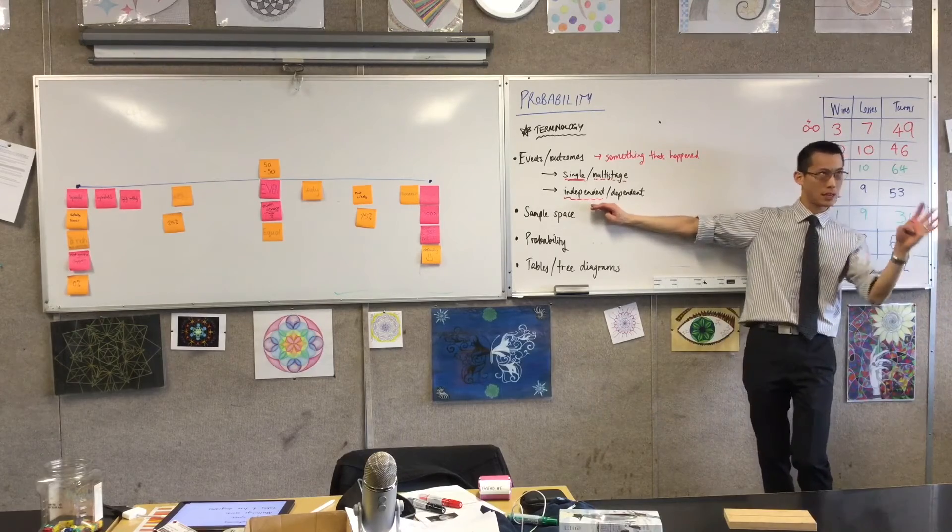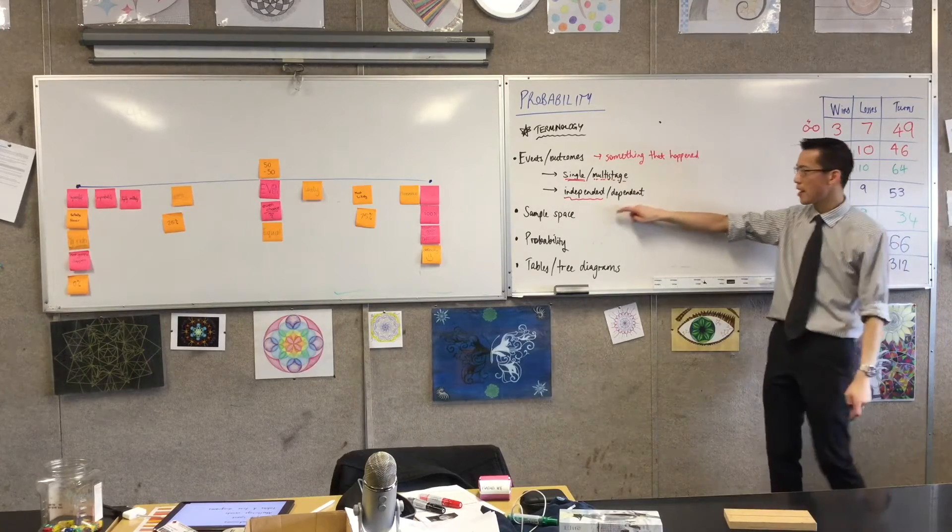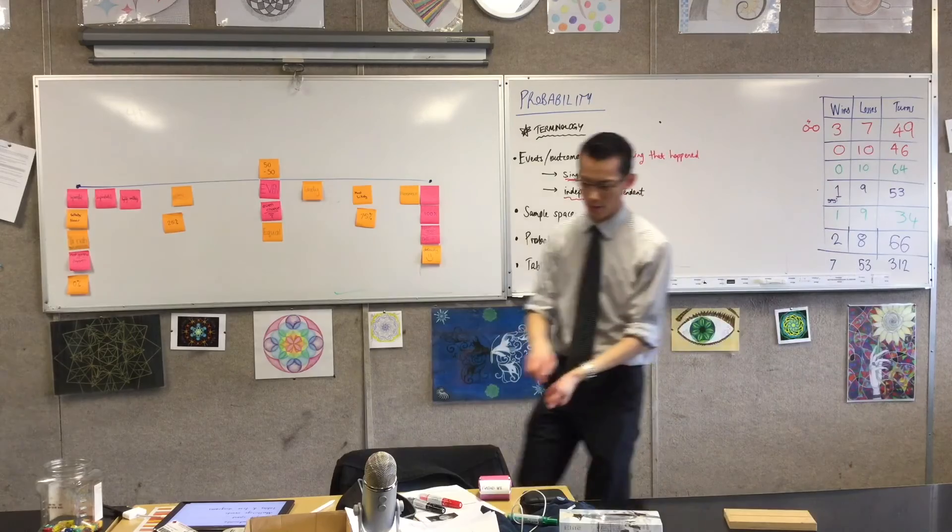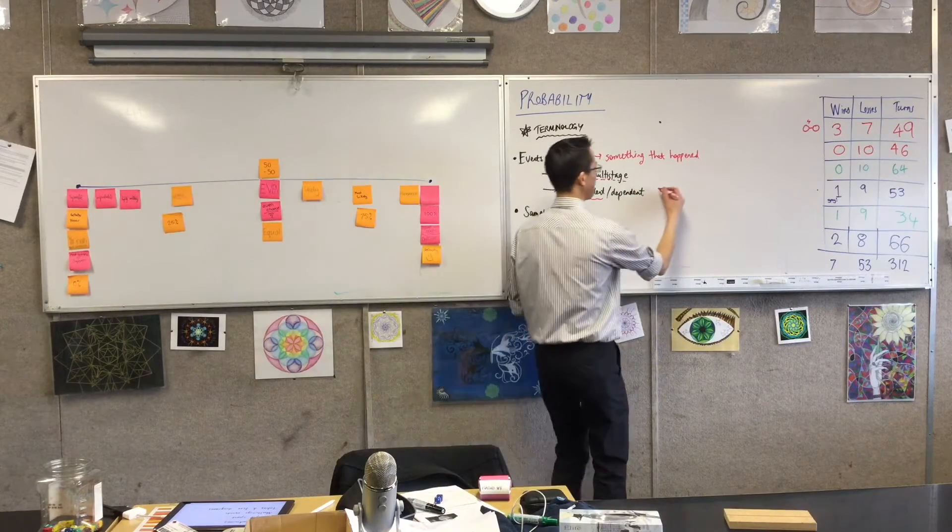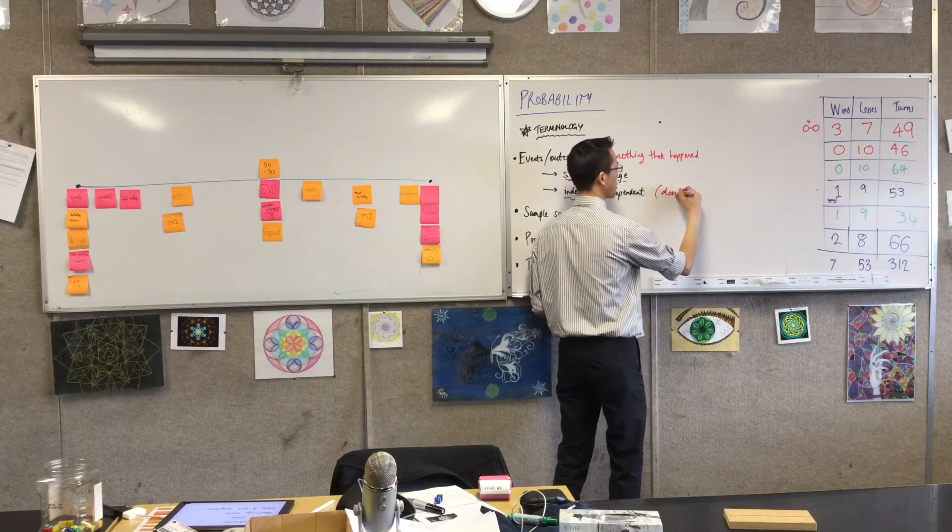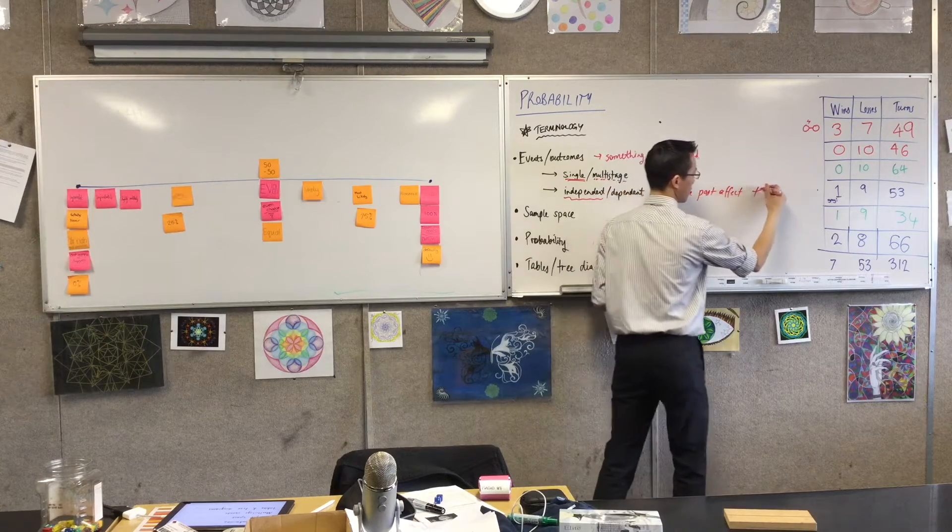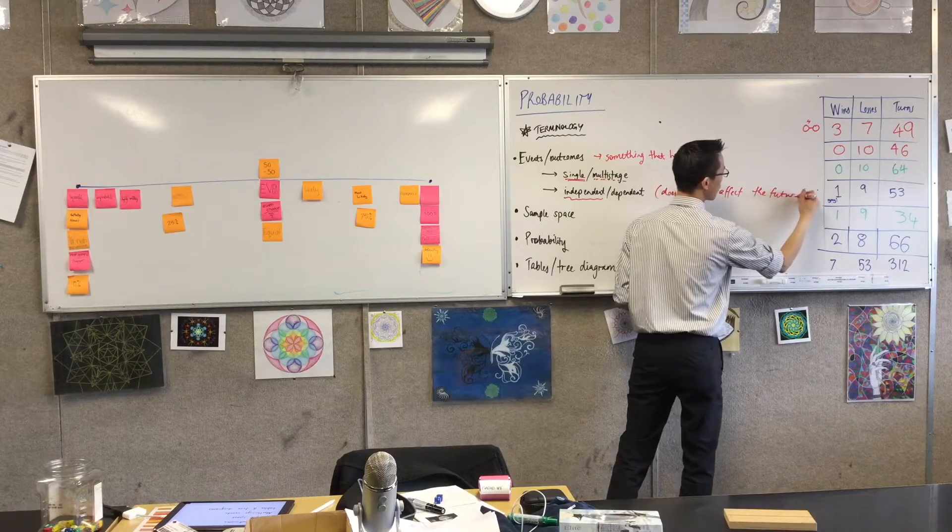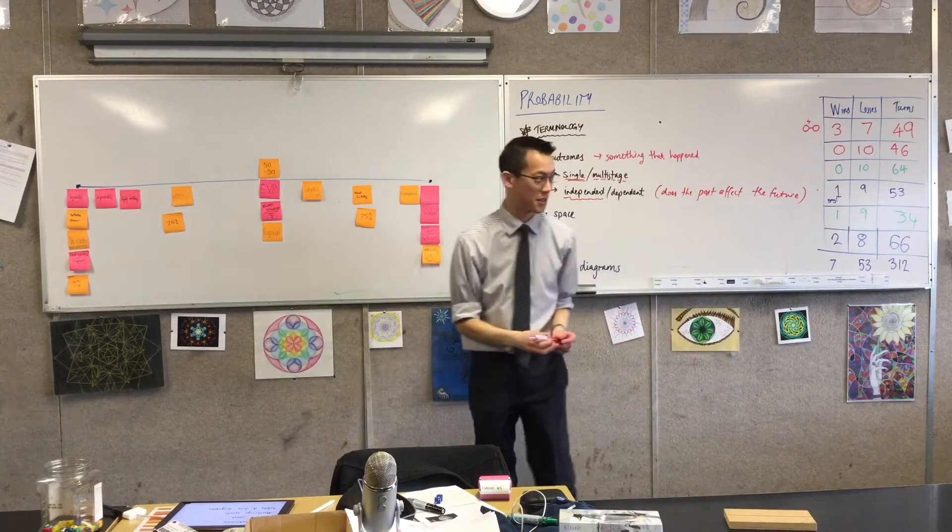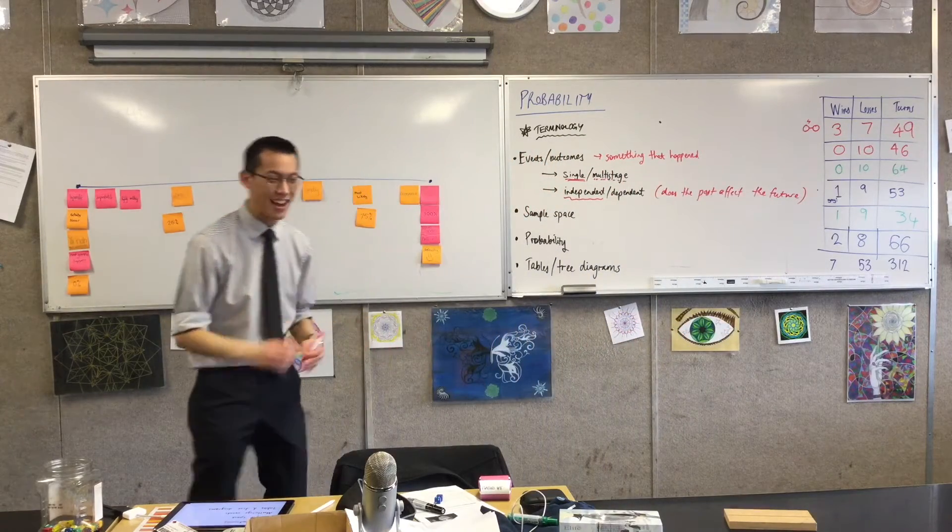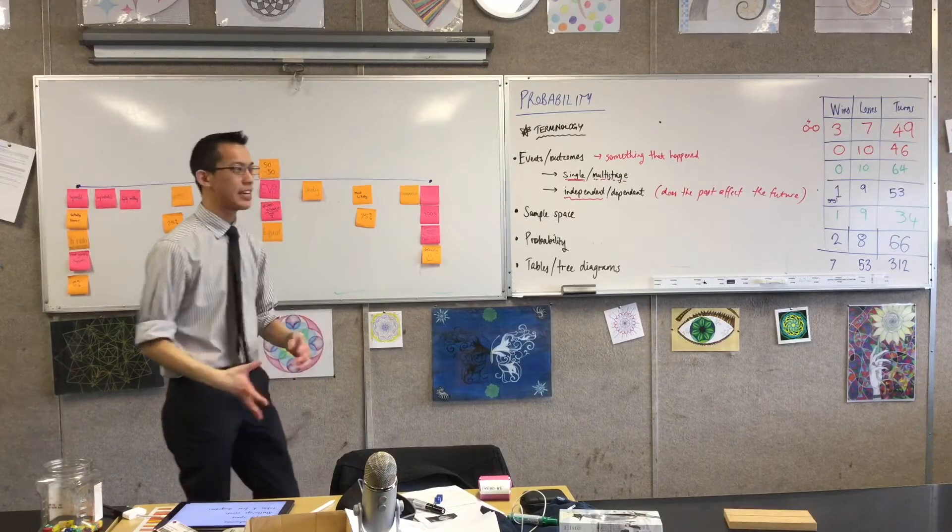As opposed to dependent events. These are about does the past affect the future. Was there anyone who got to a point where they're like "I just need to rescue one person"? I just need to rescue one, and then you keep on rolling and it takes you forever to get that last person. Did you notice that?